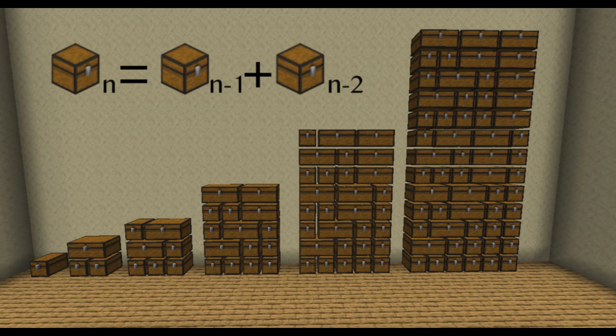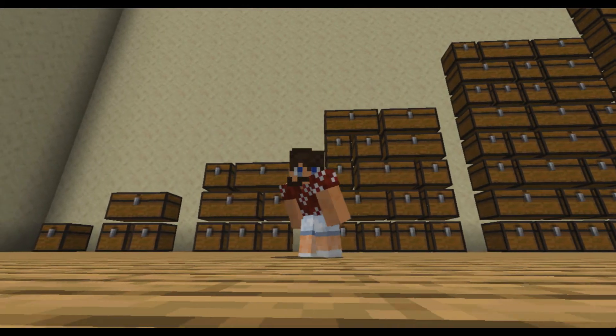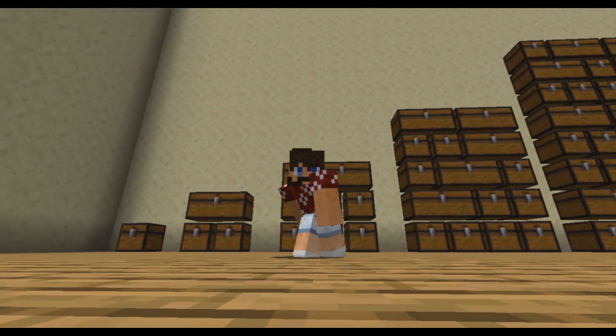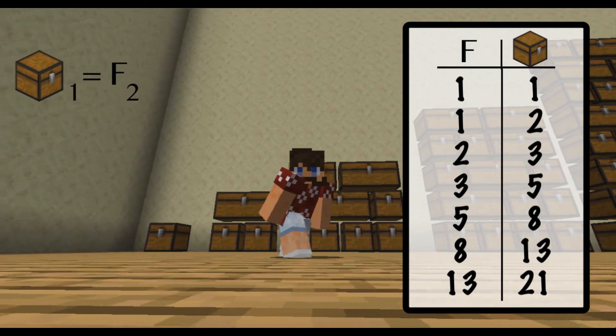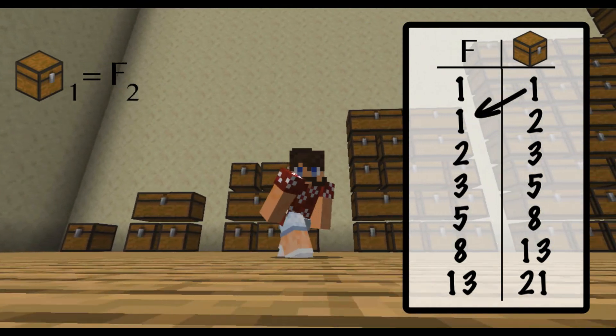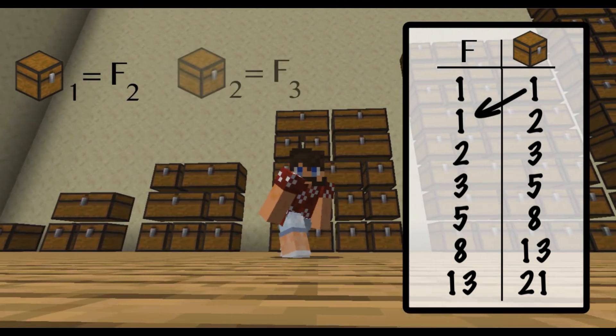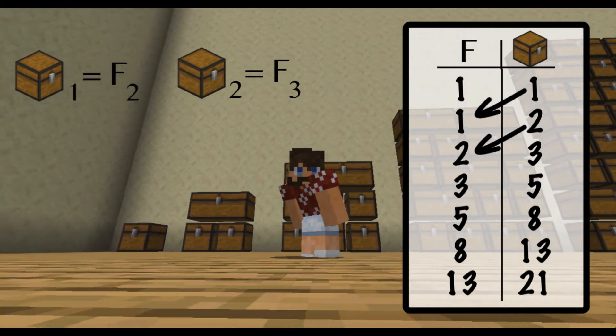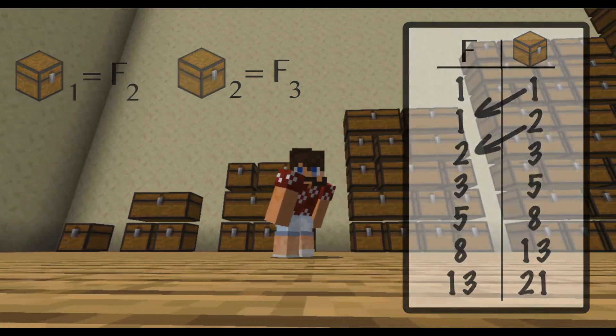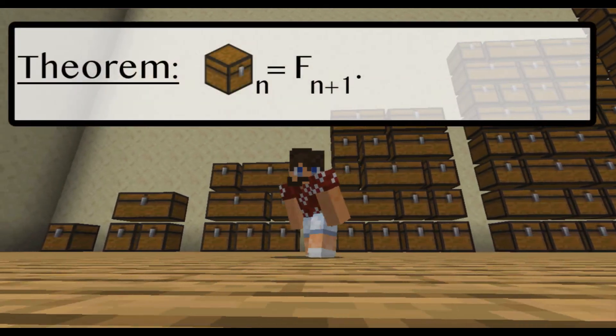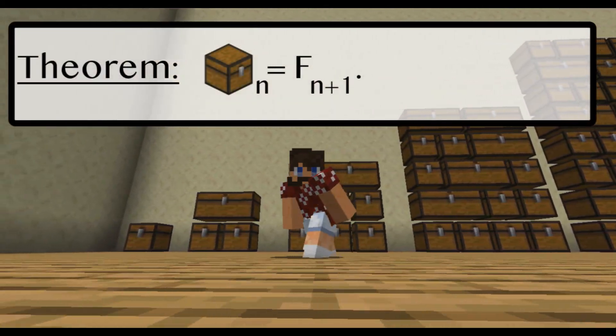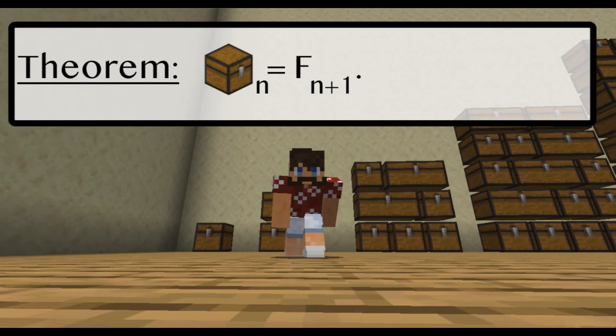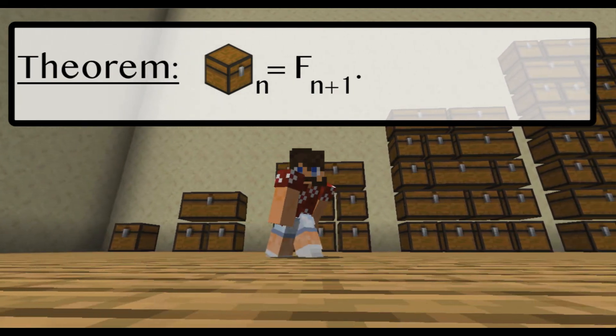This recursion is just like the Fibonacci recursion. And it's easy to check that chest sub one is equal to Fibonacci sub two and chest sub two is equal to Fibonacci sub three. And since they satisfy the same recursion, we can conclude that chest sub n is equal to the n plus first Fibonacci number.